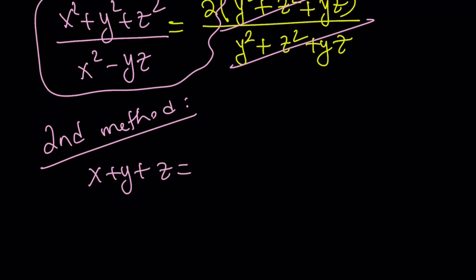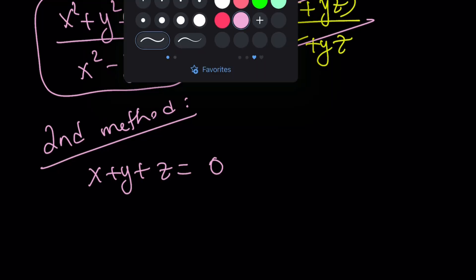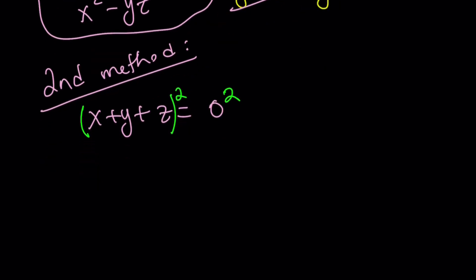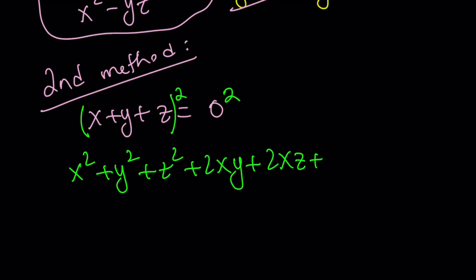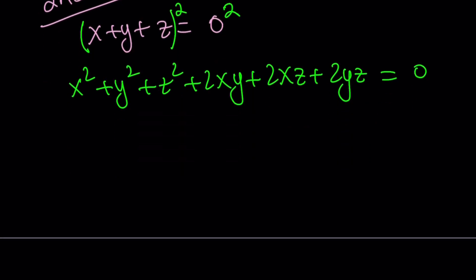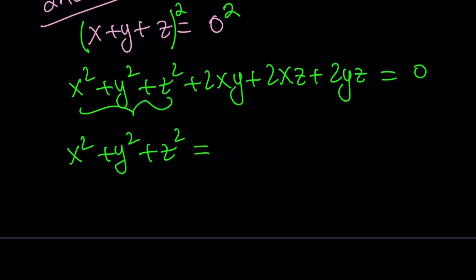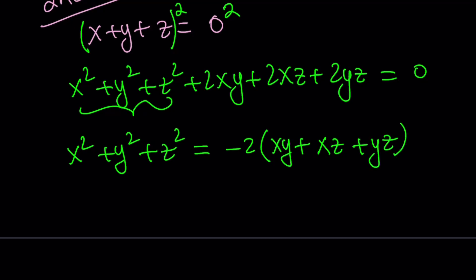For the second method, I have x plus y plus z equals 0. Instead of isolating one of the variables, why not just square both sides? That gives us 0 on the right. On the left-hand side, I'm getting x squared plus y squared plus z squared plus 2xy plus 2xz plus 2yz equals 0. I can isolate x squared plus y squared plus z squared, because that's part of my expression — that is my numerator. So I get x squared plus y squared plus z squared equals negative 2 times the quantity xy plus xz plus yz.